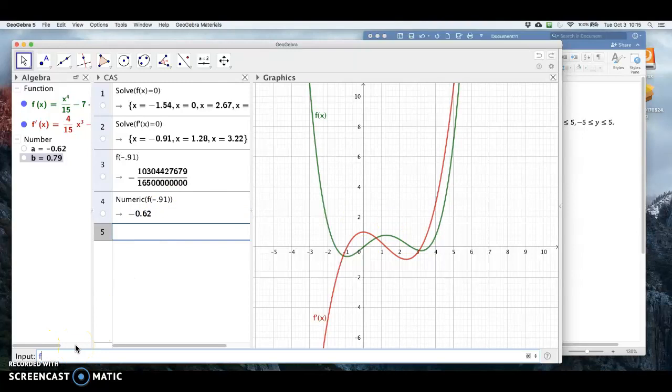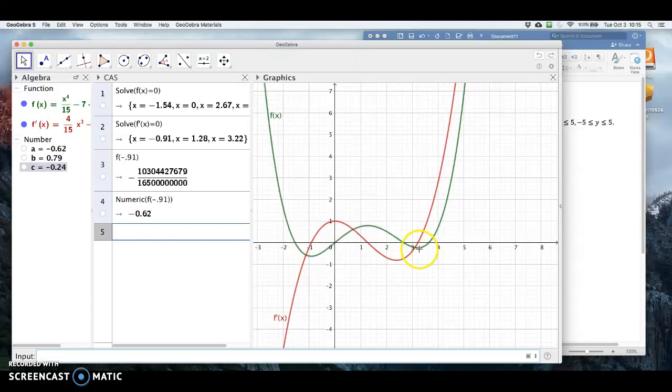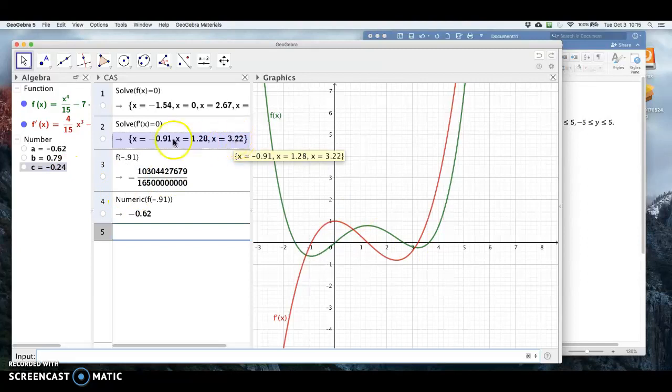And then lastly, f, parentheses, 3.22. And that's going to be right here at this critical value when the red line goes through 0. The green curve, we have a relative minimum value at 3.22. And the height would be minus 0.24.